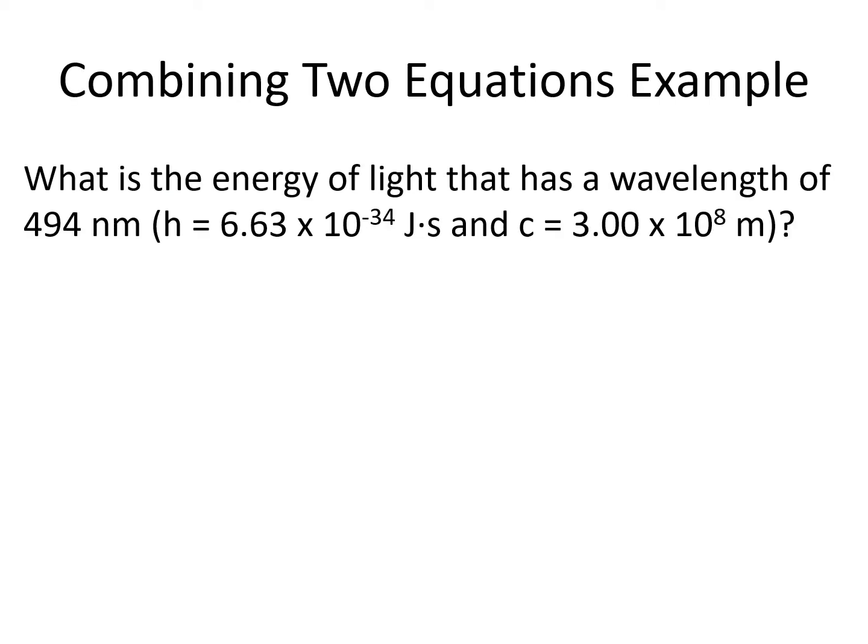Here is an example problem where we know the wavelength and have to solve for the energy. The wavelength given in the problem is 494 nm. Planck's constant and the speed of light are both given in the problem.